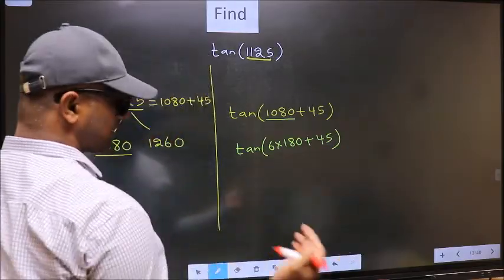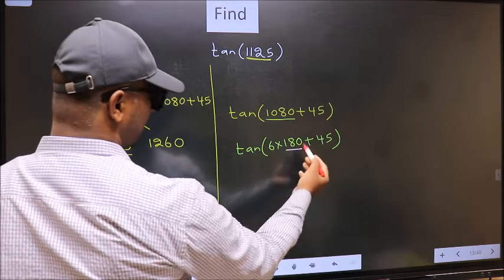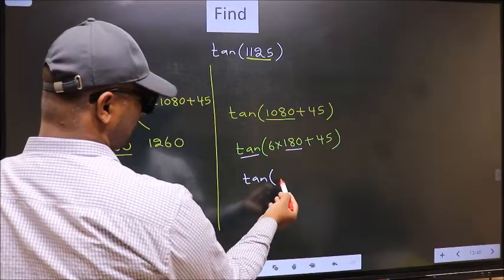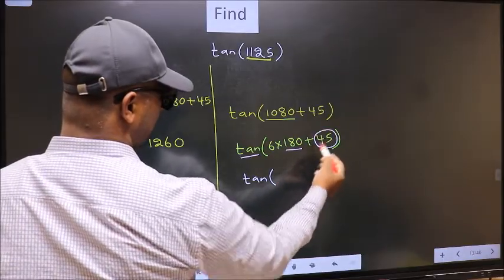Next, here we have 180. So tan is not going to change. It will remain tan. And inside, we get this angle 45.